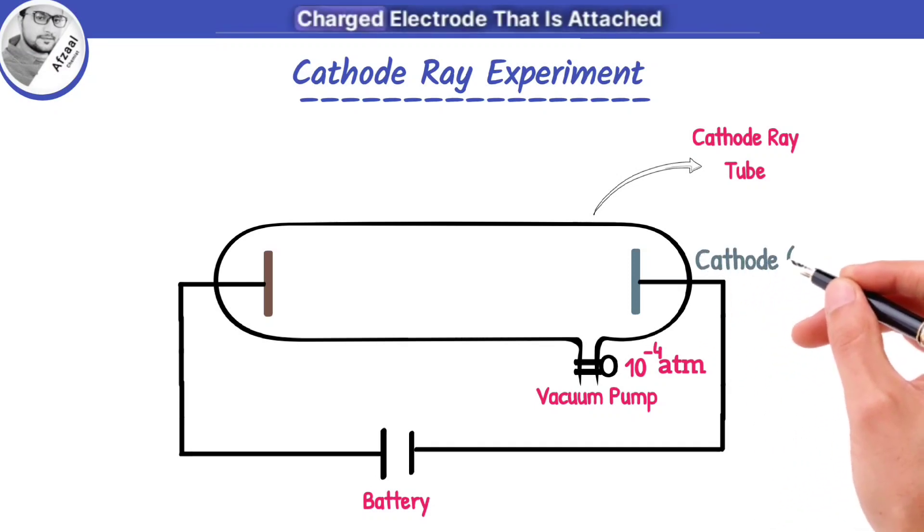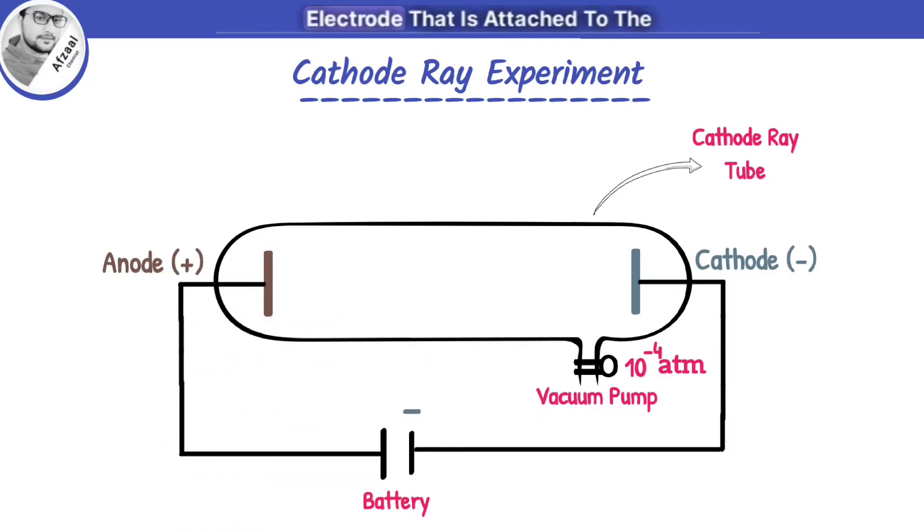The cathode is a negatively charged electrode attached to the battery's negative terminal. The anode is a positively charged electrode attached to the positive terminal of battery.